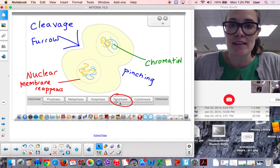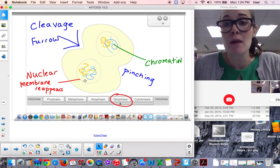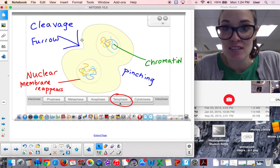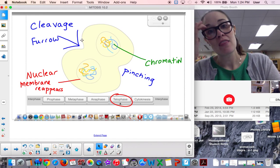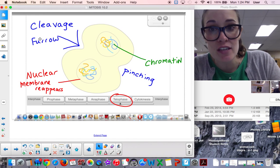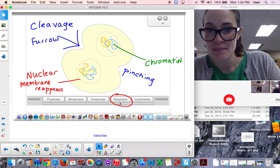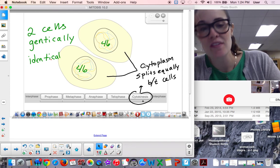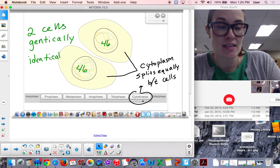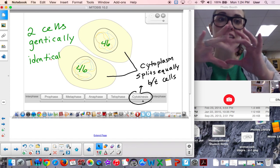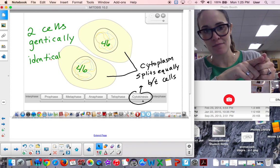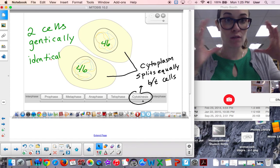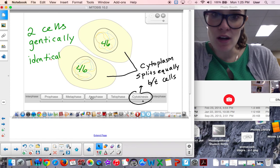The next phase is telophase. A few things to note here. We see the nuclear membrane is reappearing right here and over there. We see the cells starts to pinch. They start to pinch off from one another. This pinching has a name. It's called a cleavage furrow. The actual pinching.